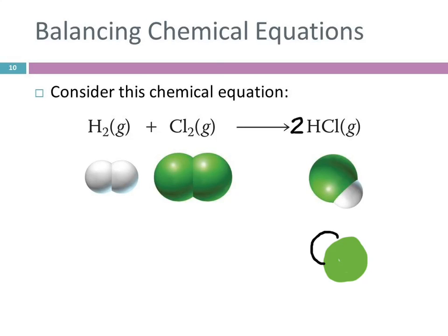So there's a little white ball and the green ball. What we do to make this equation represent what's actually happening is the coefficient. So here we have one of those molecules and one of these molecules, and over here we have two of those molecules. So we're just going to put a 2 in front of that to show that there are two of those that get made. Does that make sense?